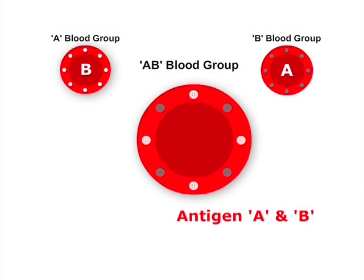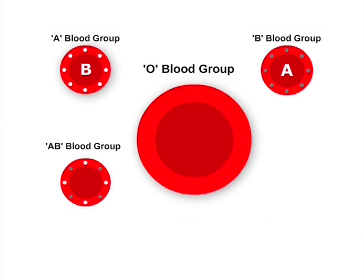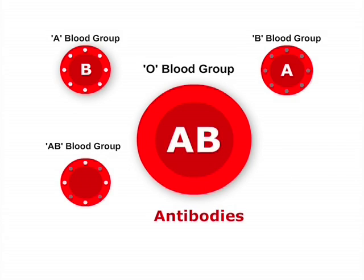AB blood group persons will have both antigen A and antigen B on their red blood cells, but they do not have both antibodies A and B. The persons with O blood group will not have either A or B, but they have both antibodies A and B in plasma.